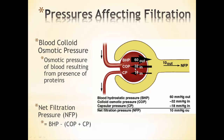To determine the overall direction of fluid movement, we look at which force is bigger. We have 60 mmHg pushing out and 32 plus 18 pushing fluids in. The difference gives us about 10 mmHg pushing fluids out into the Bowman's capsule. That is our net filtration pressure — 10 mmHg — which isn't really much.